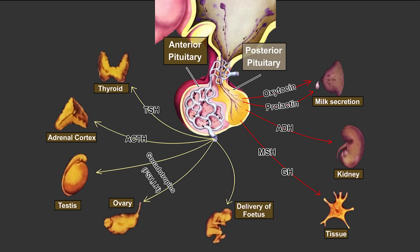Describe the hormones of neurohypophysis. The neurohypophysis, or the posterior pituitary, secretes oxytocin and vasopressin. Oxytocin contains a sequence of amino acid residues. The term oxytocin refers to rapid birth.